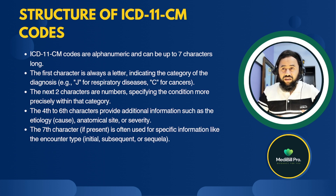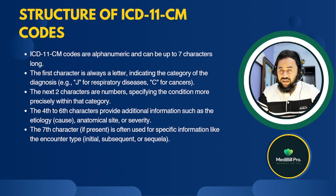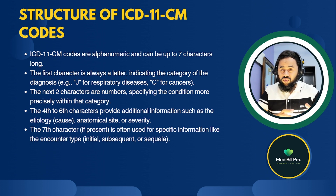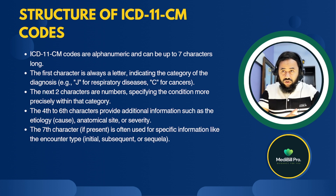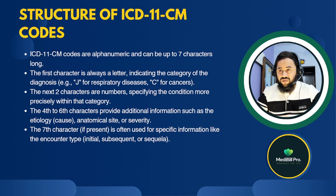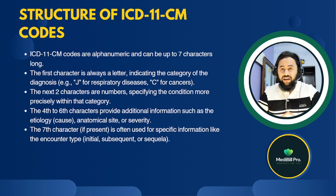The next two characters are numbers specifying the condition more precisely within the category. The fourth to sixth characters provide additional information such as the etiology (cause of the disease), anatomical side, or severity — whether the condition is acute or severe. The seventh character, if present, is often used for specific information like the encounter type: initial, subsequent, or sequela. These are the basic character meanings and the basic structure of ICD-11.